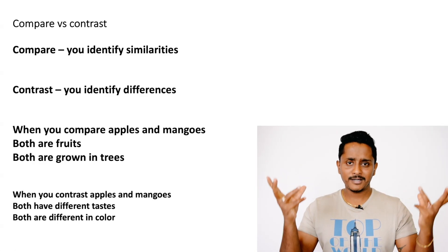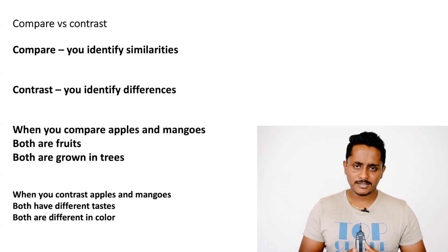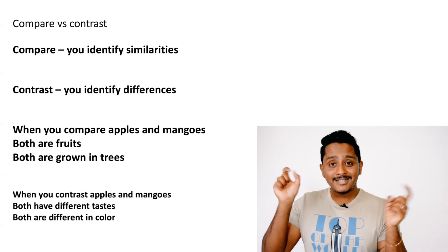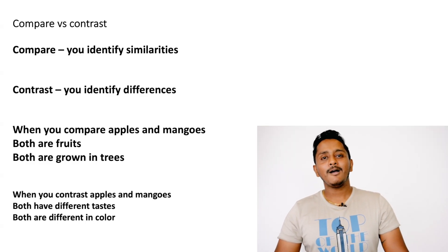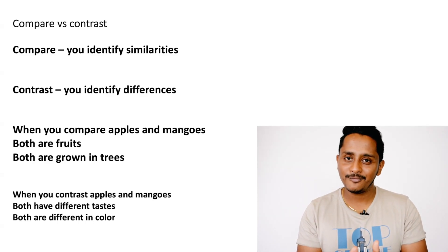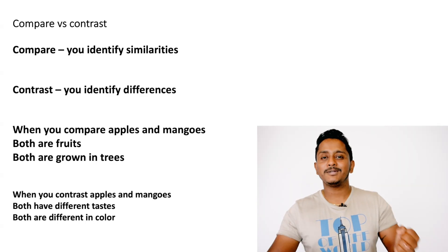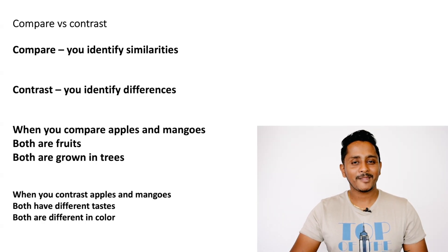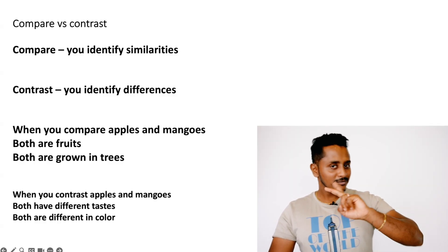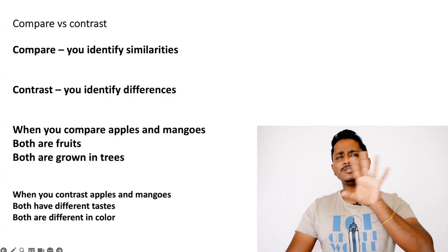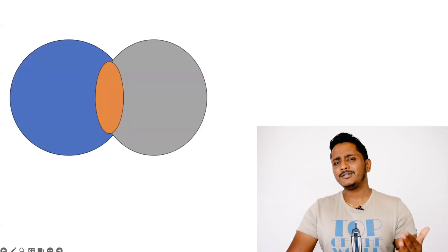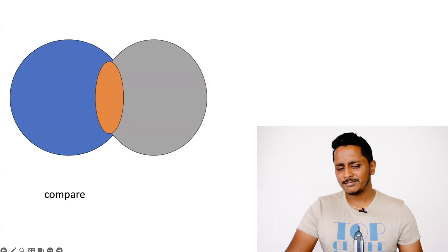When you contrast, you try to identify the difference between them. Apple and mango — what is the difference? They look different in color, different in appearance, and one has a different taste from the other. This is not comparison, this is contrasting. Compare is when you find similarities; contrast is when you find differences. Both are different in color, both have different tastes — that's contrasting. Both are fruits, both grown on trees — that's comparison.